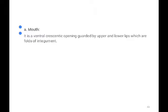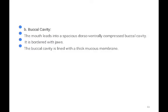The upper and lower lips are called the maxillae. These lips are nothing but folds of the integument. The buccal cavity leads into a spacious, ventrally compressed buccal cavity, bordered by the jaws.